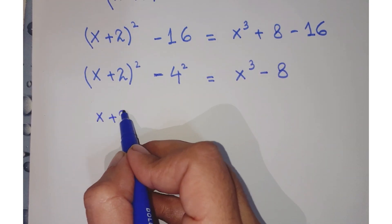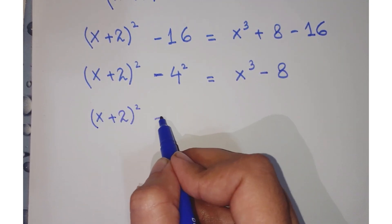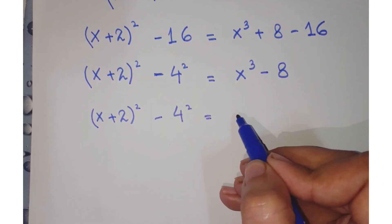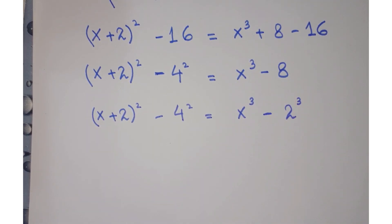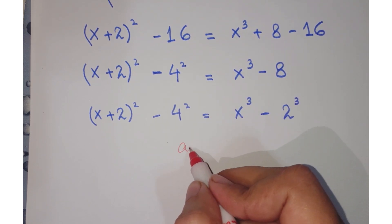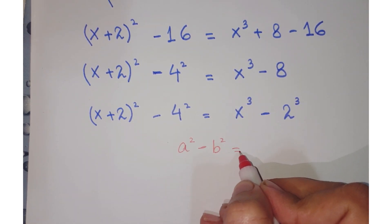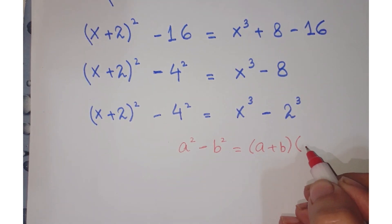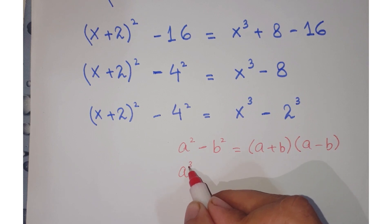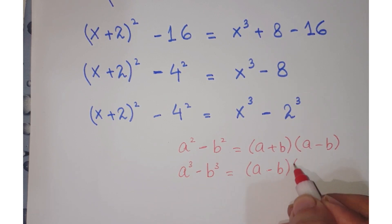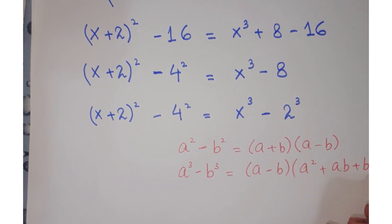Further, you can write it as (x+2)² - 4² = x³ - 2³. Here we can apply two algebraic identities: a² - b² = (a+b)(a-b), and for the cube, a³ - b³ = (a-b)(a² + ab + b²).